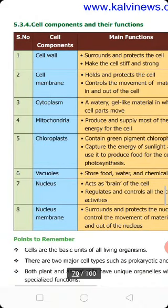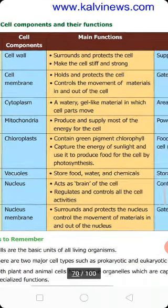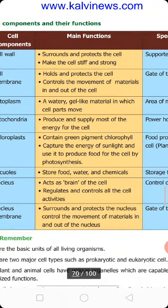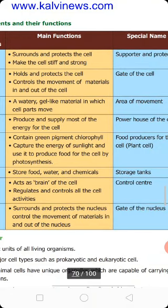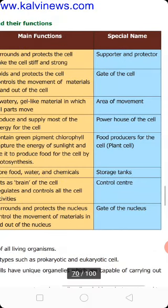Next are vacuoles. Vacuoles are present in both plant cells and animal cells, but in plant cells they are larger in size, while in animal cells they are very small. Their function is to store food, water, and chemicals. Because of this, vacuoles have the special name: storage tanks.